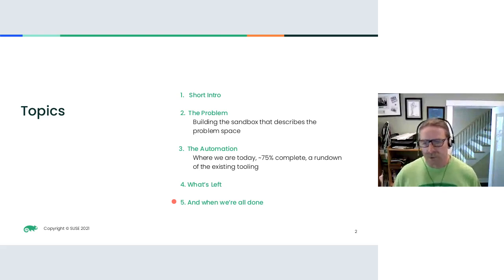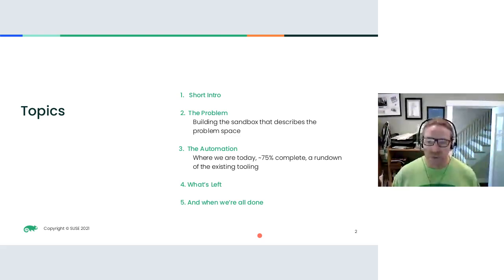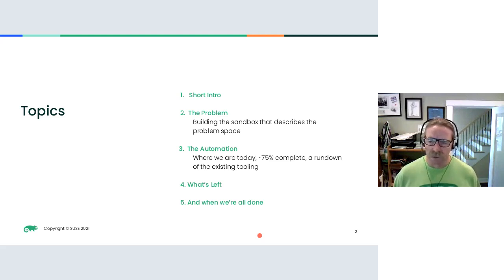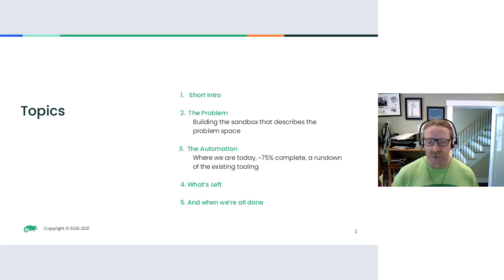The topics today: a short intro about myself just in case there's somebody that doesn't know me. Then I'll describe the problem — basically to give everybody an idea of how big the sandbox is of the problem space we're trying to solve with the automation. Then I'll talk about the automation itself — we're about 75-80% there. Then I'll highlight some of the areas of what is left, and then I'll show a picture of what it's supposed to look like when we're all done. If you have any questions, feel free to type them into the chat and I'll try to come back to them towards the end.